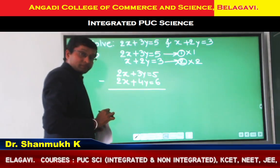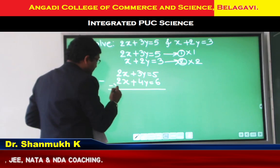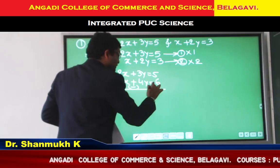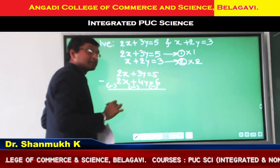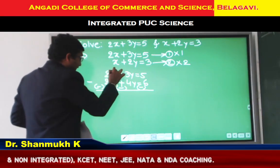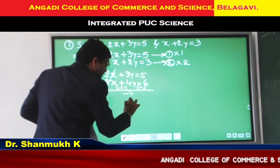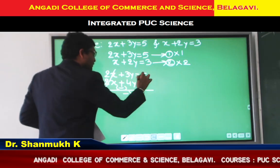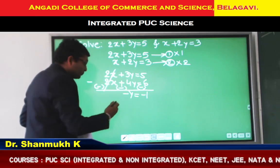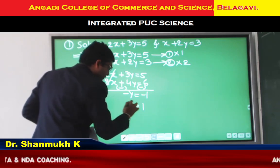Then, by subtraction, we can eliminate X. Change the sign: plus 2X becomes minus, plus 4Y becomes minus, and 6 becomes minus. We observe that plus 2X and minus 2X get cancelled. Then 3Y minus 4Y gives minus 1Y, equal to 5 minus 6, which gives minus 1. Both sides have minus in common — it cancels. Simplifying, we get Y equal to 1.